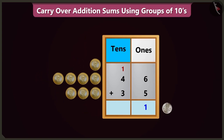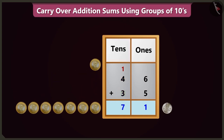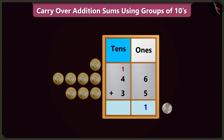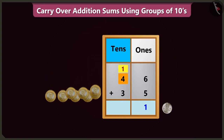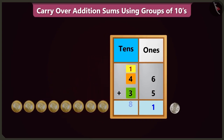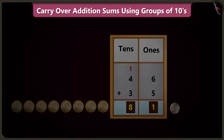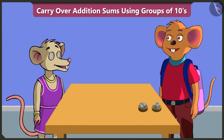Now in the box of tens, adding 4 and 3 will make 7. But wait — you did not count the carry over written in the tens box! Oh, I made a mistake. Adding the carry over 1 in the tens box to 4 makes 5, and adding 5 and 3 makes 8. The total amount is 81. While doing addition, don't forget to count the carry over number as well. I will definitely remember.